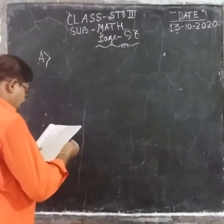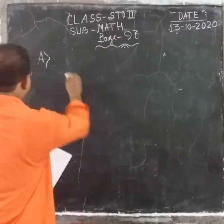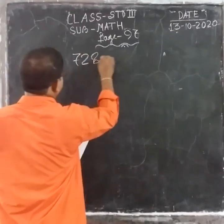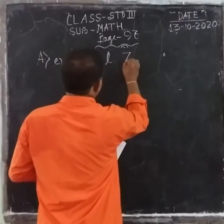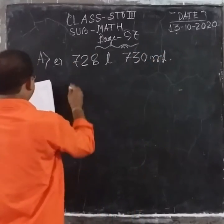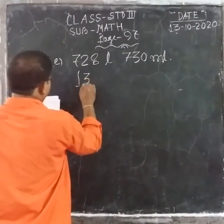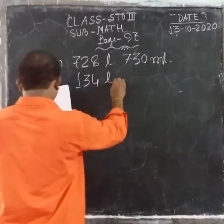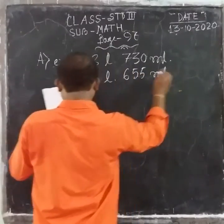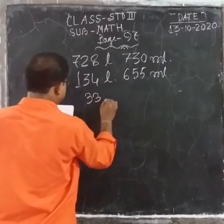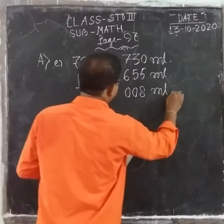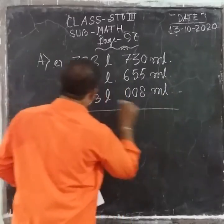Then move to question number E. Question number E is: 728 liters 730 milliliters. We have to add.